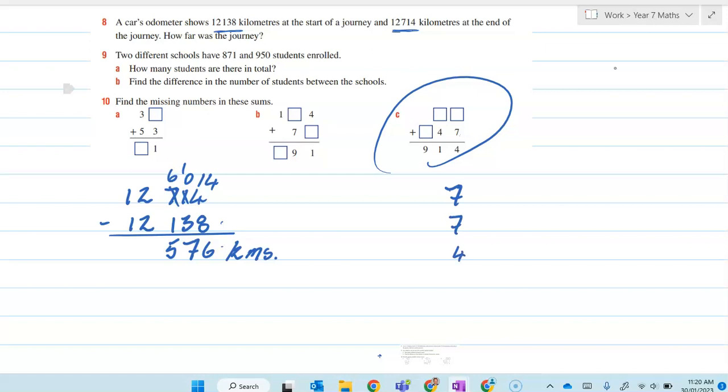carry the 1. That becomes 5. So the only thing that adds to 5 to give us 1 is 6. So that'd be 5 and 6 is 11. Carry the 1 there. So 1 plus something gives us 9. So therefore that has to be 8.